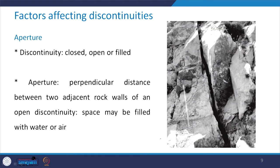The next factor influencing discontinuities is aperture. A discontinuity can be closed, open, or filled. Aperture is defined as the perpendicular distance between the two adjacent rock walls of an open discontinuity. This space may be filled with water or air. In the example shown, the joint is filled with air only. The aperture is simply the distance you measure between the two rock surfaces.